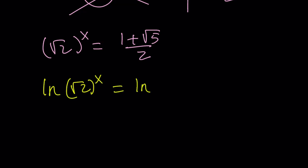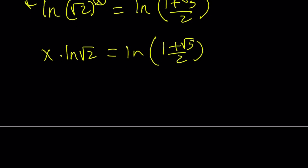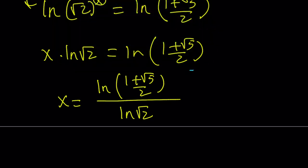Right. You could also use a different base. It doesn't matter. At the end, they're going to be equivalent. So this x, we can bring it down. Write it as x times ln square root of 2 equals ln 1 plus root 5 over 2. And then by dividing both sides by ln root 2, you'll get the answer. So x can be written as ln 1 plus root 5 over 2 divided by ln root 2. You could also write this using log, base, whatever. But it doesn't matter. No big deal. This is fine. Okay. So that's going to be our answer.